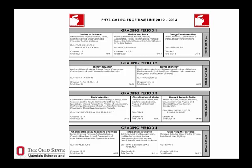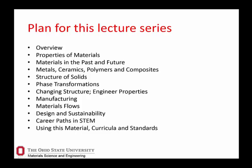Physical science is usually taught in ninth grade in Ohio. Big parts of this couple very nicely to material science, particularly energy transformations — like putting heat in to melt things — forms of energy, classifications of matter, chemical reactions, and interactions of matter. This forms about half of the physical science content in most any physical science curriculum, and the circled topics all fit very nicely into material science.